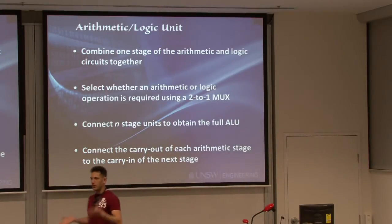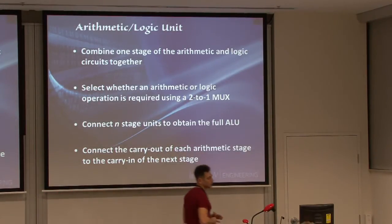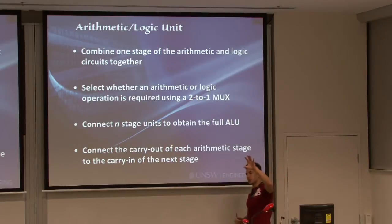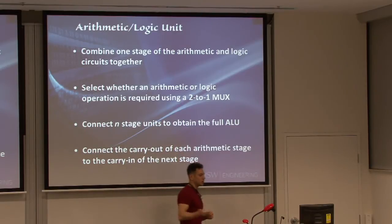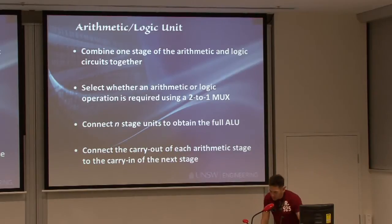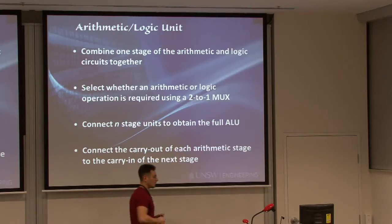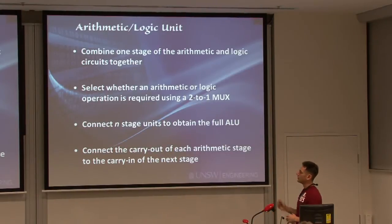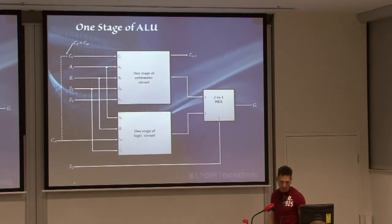We finished off by designing the arithmetic circuit, we've built the logic circuit, and now we want to join them together to build the ALU. To combine the ALU, we'll stack the arithmetic circuit next to the logic unit and use a multiplexer to choose which one we want using the control line S2. The carry-out of every arithmetic circuit stage will be connected to the carry-in of the next stage, with the carry-in to the overall ALU being the general carry-in coming from the outside.